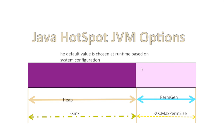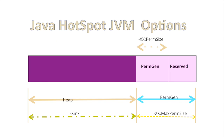In PermGen, no garbage collection will happen. To configure this block we use -XX:MaxPermSize, which gives the maximum PermGen size. In PermGen there are two blocks: the PermGen itself and a reserved block. We also configure the initial PermGen size using -XX:PermSize.